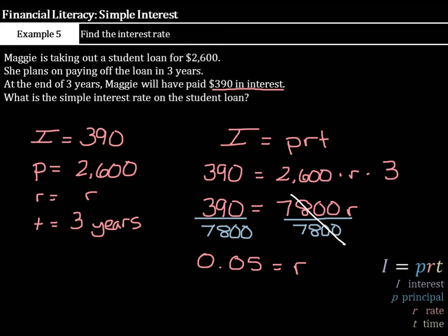Now, that is our interest rate. To finish the question, though, let's get this back to a percent. Move this decimal place over twice to the right, and we end up with 5%. So, on a student loan of $2,600, paid off in three years with $390 in interest, Maggie's interest rate was 5%.